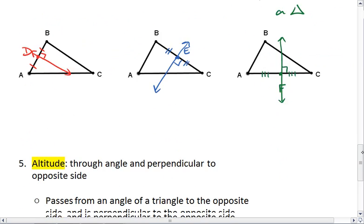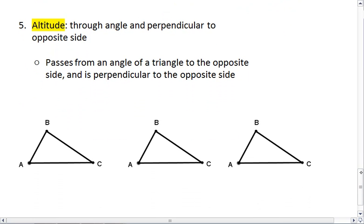The fifth and last special segment or line I want to look at is called an altitude. An altitude goes through an angle and is perpendicular to the opposite side.